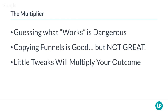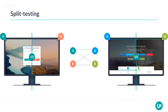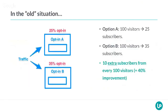Now, let's say you split test and find that option B converts way better on both the opt-in page and the thank you page. You send in 100 people: 35% sign up, that's 35 leads. Then 20% of those people share — that's 7 shares, meaning 140 visitors you get back. Cycle two: those 140 visitors result in 49 leads. With 10 shares that's 200 visitors. Cycle three: those 200 people result in 70 leads. Cycle four: 98 leads. The number of leads every cycle is actually going up.